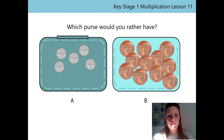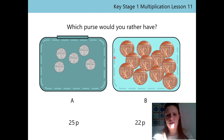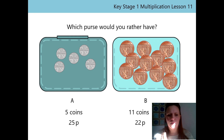So we know now that Purse A has a value of 25p and Purse B has a total value of 22p. But did you notice Purse A has fewer coins than Purse B? Can you remember why that was? That's right — it's because each coin had a greater value in Purse A.